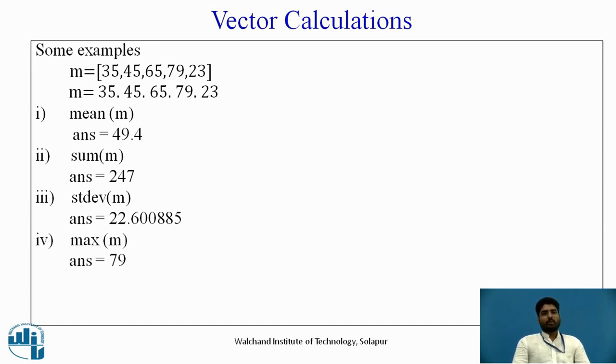If you want to know the maximum value from all 5 elements, the command or code is very simple, that is max of the vector m. The answer will be 79 because 79 is an element or number which is largest among all 5. If you want to show the minimum value among all these 5 elements, the code or command is min in bracket m, the answer will be 23.